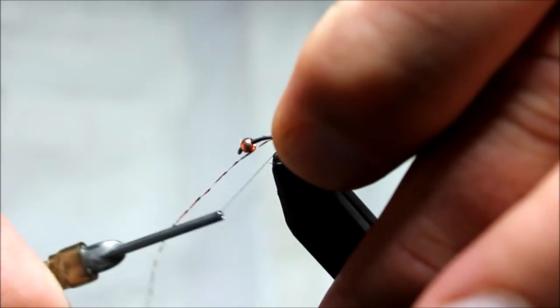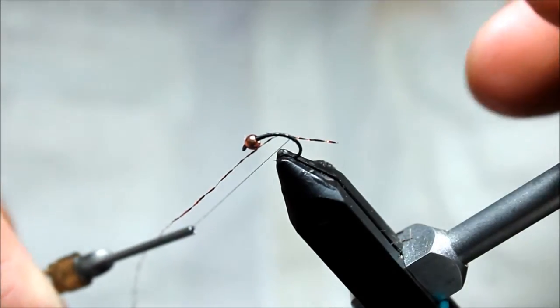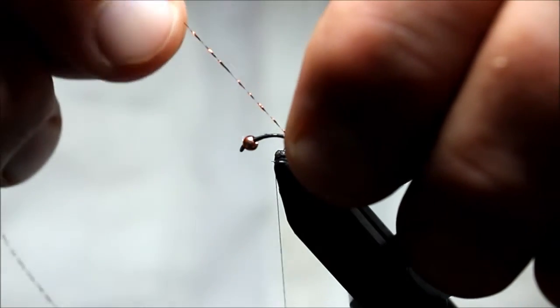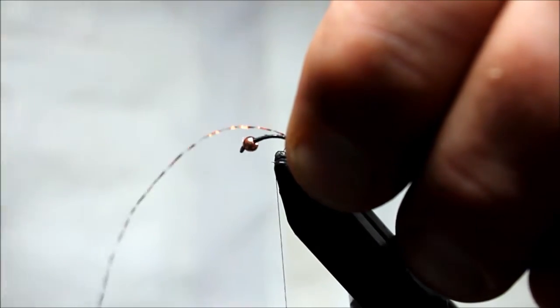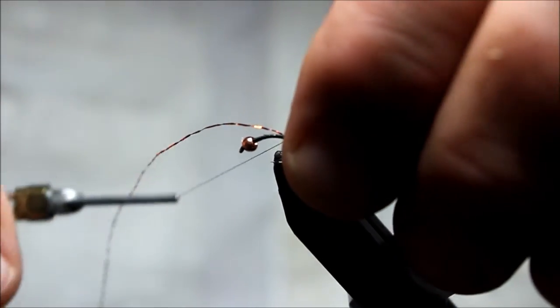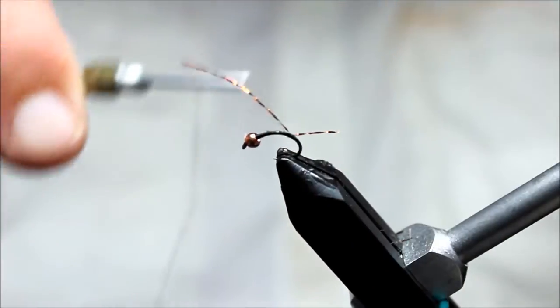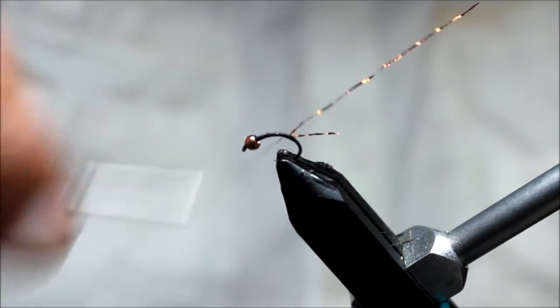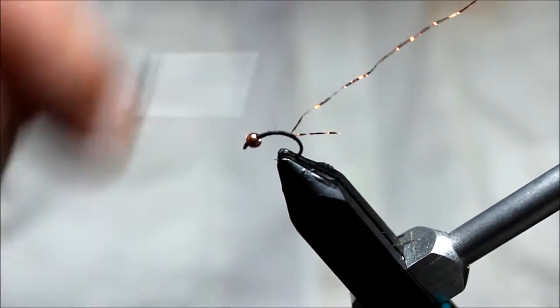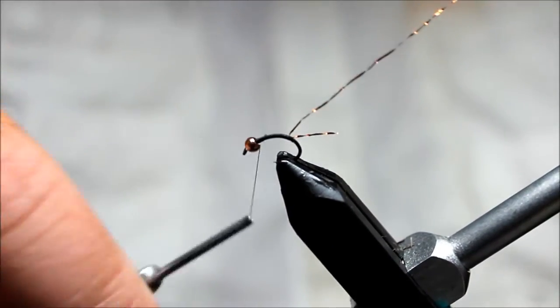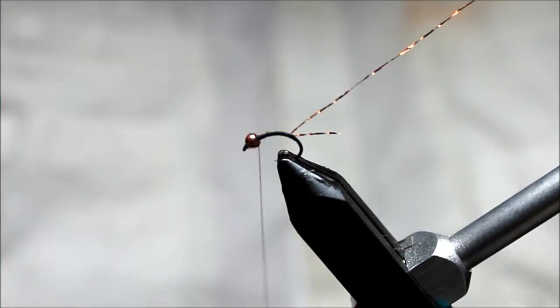I'm going to start with a size 16 hook—this is a scud hook, some people call it a midge hook, it's a curved hook—and I'm going to tie in with black ADOT unithread a piece of copper crystal flash. On this fly I'm using a two and a half millimeter copper tungsten countersunk bead.